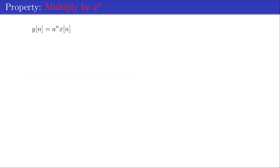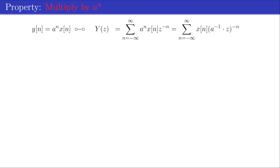If a sequence x[n] is multiplied by a complex exponential a^n, the resulting z-transform Y(z) can be obtained by combining the parameter a^{-1} and the variable z, resulting in a scaled version of X(z). The resulting region of convergence is also scaled by the parameter a.